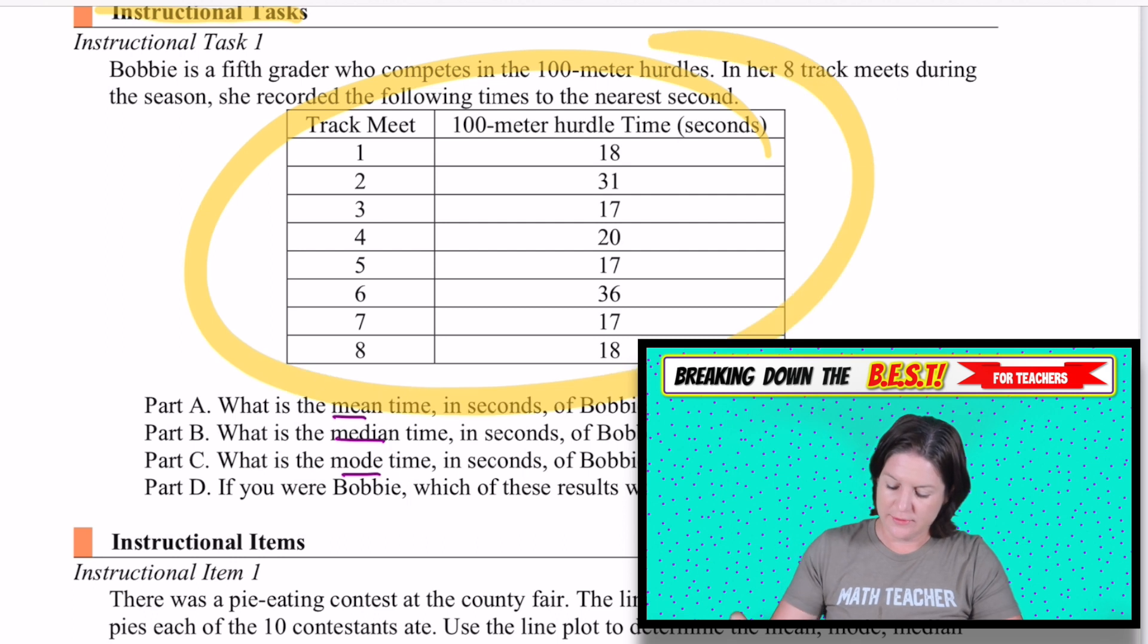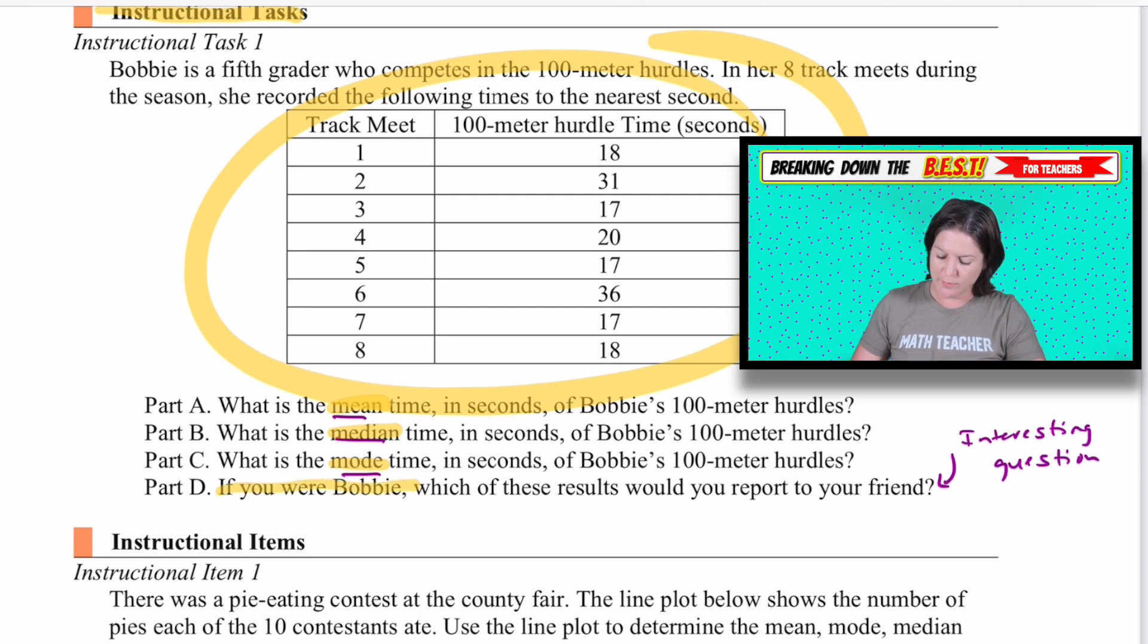We've got a data table right here, finding the mean, the median, and the mode. And I thought this was an interesting question. If you were Bobby, which of these results would you report to your friend? So I thought this was interesting. Obviously, there is no right or wrong answer there. But I think what they're trying to do is say, to get the students to realize that I would want to say that out of, you know, that the amount that I, that my mode, 17, was also my fastest time. And I did my fastest time three different times. So I'm trying to beat that. Okay.